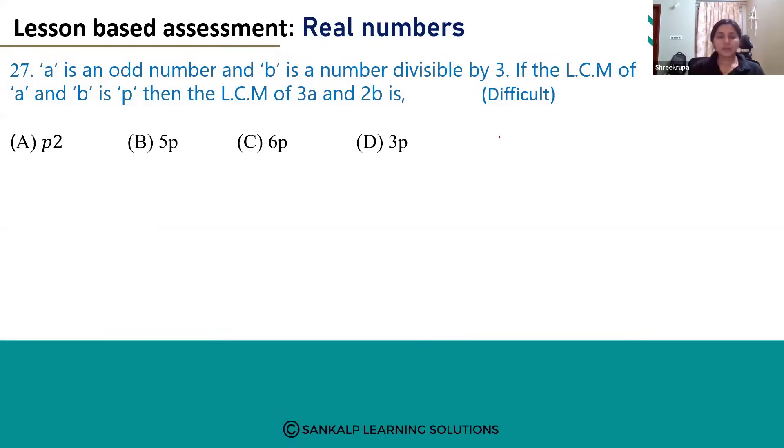Hello everyone. Let's see question number 27. A is an odd number and B is a number divisible by 3. If the LCM of A and B is P, then the LCM of 3A and 2B is.